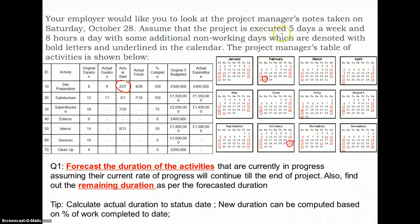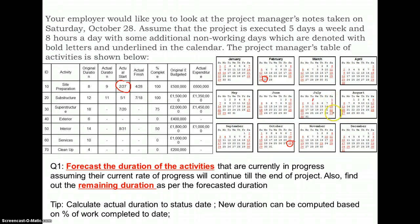We are assuming that we are working with the standard five days a week and eight hours a day shift, with a few additional non-working days. Those additional non-working days are indicated by the underlined areas here. All the red dates with underlining are the non-working days, such as Sundays and a few non-working holidays. The project manager's table of activities is indicated here.